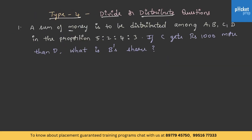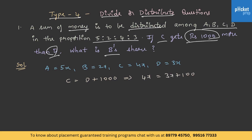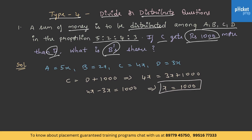Type 4: divide or distribute questions. A sum of money is to be distributed among A, B, C, D in the proportion 5 is to 2 is to 4 is to 3. If C gets rupees 1000 more than D, what is B's share? Let us assume shares as 5X, 2X, 4X, and 3X respectively. Since C gets 1000 more than D, we write 4X equals 3X plus 1000, giving X equals 1000. B's share is 2 into 1000, which equals rupees 2000.